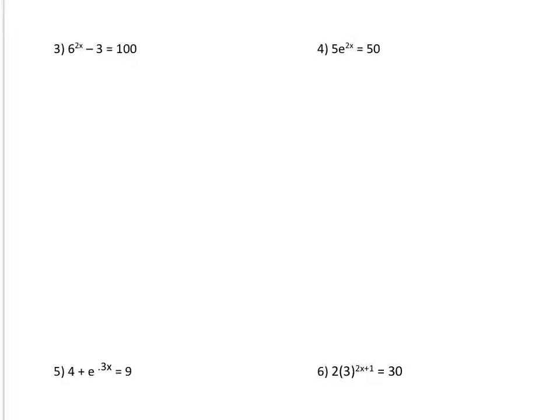Okay, let's move on to another example. Example number 3. Again, we want to isolate the base. So, this base right here is what we need to isolate. So, we're going to add 3 first. And we have 6 to the 2x equals 103.